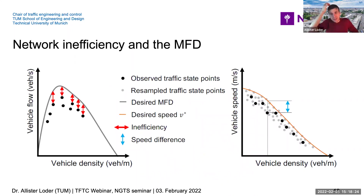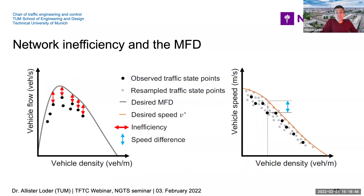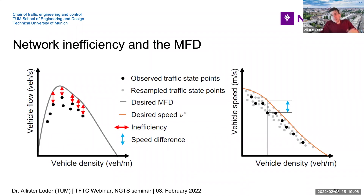To summarize theoretically: we have a desired MFD, which is the upper curve — traffic states are never observed above it but are observed below it, and this gap is the inefficiency. We use a method called resampling of the macroscopic fundamental diagram to get a better approximation of the upper bound — the desired speed curve — and then quantify the additional delay as the difference between the desired speed and the observed speed.